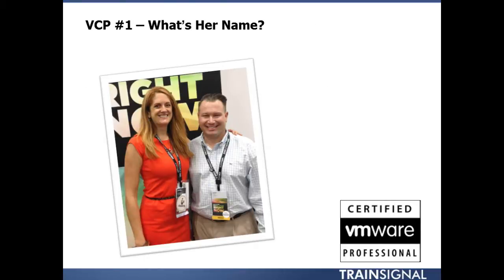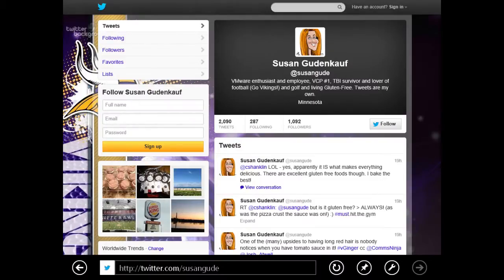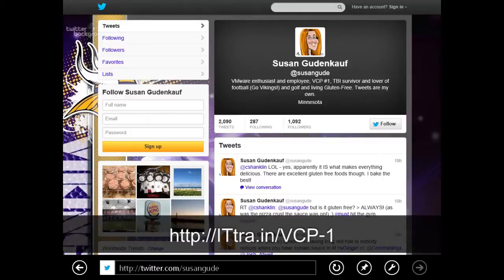If you want to become a VMware Certified Professional, you should also know who was VCP number one. That question won't be on the exam — the exam covers vSphere, vCenter, and ESXi — but you should know who came before you. VCP number one is pictured with me here. She works for VMware and I was honored to have my picture taken with her at VMworld 2012. Her name is Susan Gudenkopf. Train Signal did a video interview of her, posted on our blog, covering her story and what it was like to become the first VMware Certified Professional.